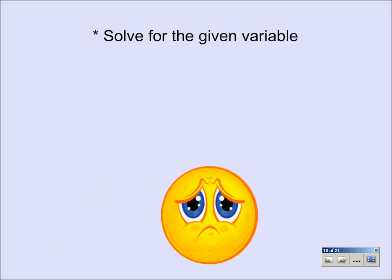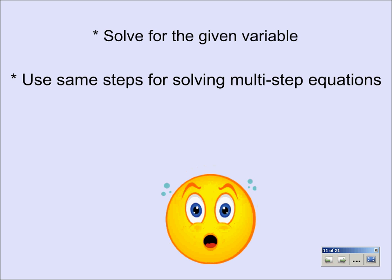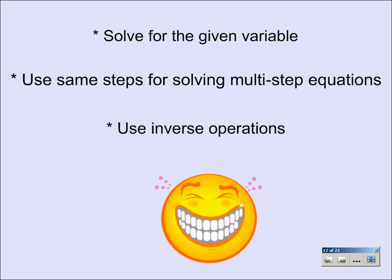What we want to do first is set up our equation and solve for the given variable. The way we're going to do this is use the same steps for solving multi-step equations: using the inverse operation. The opposite of adding would be subtracting; the opposite of multiplying would be dividing. And remember, what we do to one side we're going to do to the other.